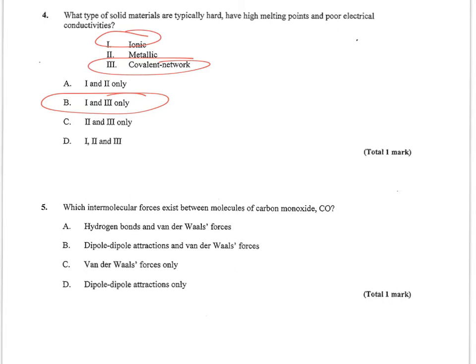Number five wants to know which intermolecular forces exist between molecules of carbon monoxide. Well, carbon monoxide is triple bonded and so this is a polar bond. That means it has dipole-dipole forces going on, but not hydrogen bonds. And then it also will have potential Van der Waals or London forces. So B would be the correct choice.